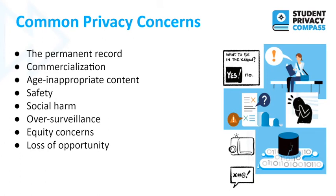People worry about the permanent record — that stereotypical file that never goes away in the principal's office, and when you're 40 years old they get down your dusty record and find out about your miscreant youth. Parents worry that mistakes their children make will follow them for the rest of their lives, particularly when records are digitized and that information is now online and more accessible to others.